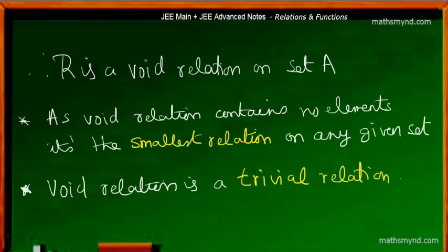And as this is a kind of a theoretical relation, a relation ought to contain ordered pairs, but in this particular case there is no ordered pairs or elements. And so we also call it a trivial relation.